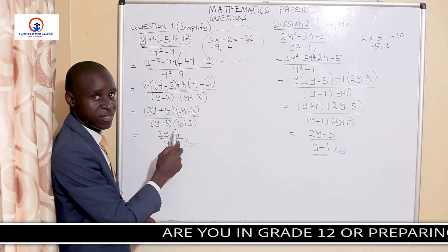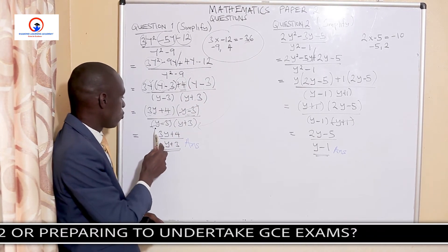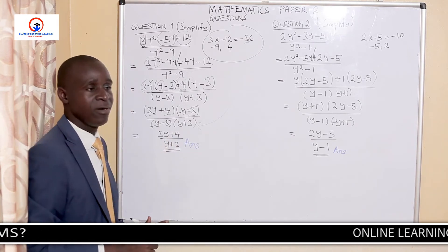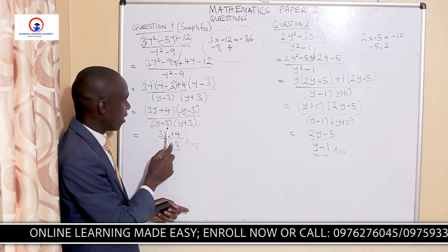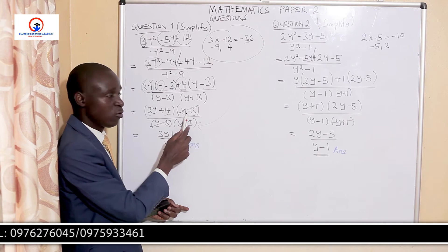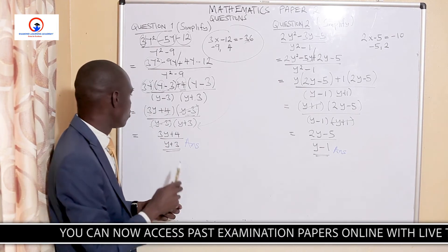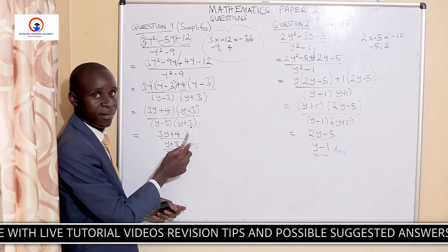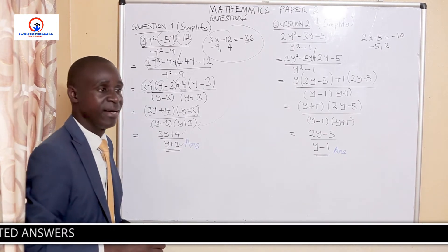I go down to the denominator, which was the difference of two squares. I have y minus 3 and y plus 3. At this stage, I pick out what is common between the numerator and the denominator. The numerator is (3y plus 4)(y minus 3), and the denominator is (y minus 3)(y plus 3). The common part is y minus 3, so we simply cancel it out. What has remained is the final solution: 3y plus 4 over y plus 3.